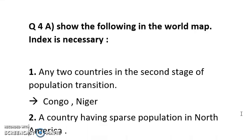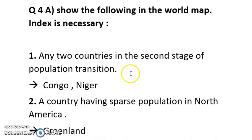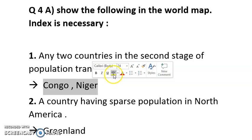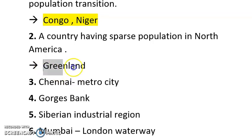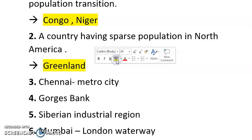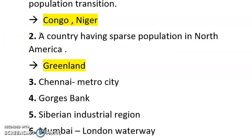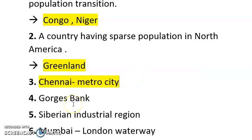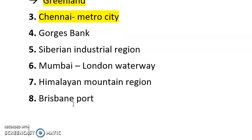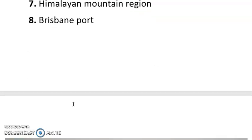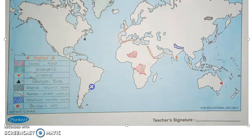Next question 4A section: any two countries in the second stage of population transition — Congo and Niger are the two countries given here. Then countries having sparse population in North America — the answer is Greenland, which has the least population in North America. This is also an important question asked in board examinations. After that we have Chennai as a metro city. Then Georges Bank. Then Siberian Industrial Region. Then Mumbai to London waterway. Then Himalaya Mountain Region. And finally Brisbane Port.